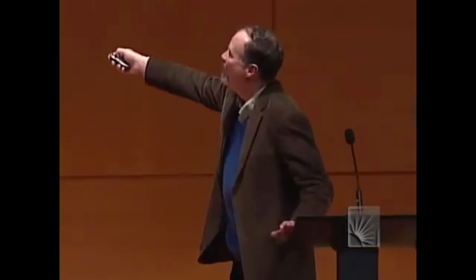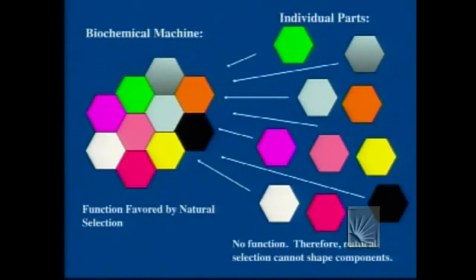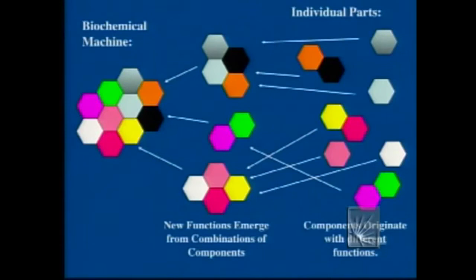So what is this argument about? Here's the argument in simplified form: if you have a complex, multi-part biochemical machine composed of many parts, its function can be favored by natural selection — everyone agrees on that. But the argument is that evolution can't produce these machines because the individual parts have no function of their own. That's what irreducible complexity means: natural selection can't make part A or part B individually, therefore you can't evolve a structure like this. Ever since Darwin, we've had a good explanation: these complicated machines don't arise from scratch; they arise from combinations of components that have different functions of their own, and natural selection works every step of the way.